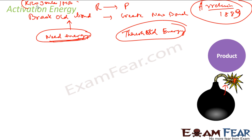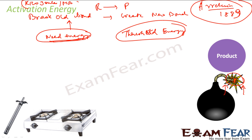For example, you have a bomb — but if you just keep the bomb it won't burst. You need a small amount of energy; a small fire can burst this bomb. That small fire provides the activation energy for the bomb to burst. Same thing with LPG gas — it won't light on its own, you need a lighter. The lighter provides a small spark, and with that spark everything works. That small amount of energy required to start a reaction is called activation energy.